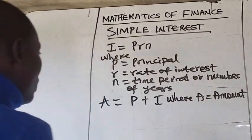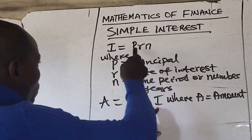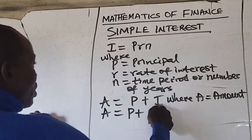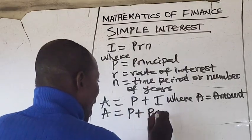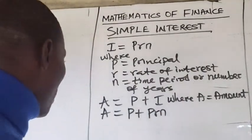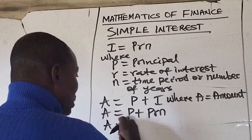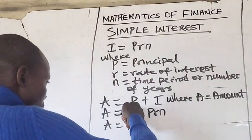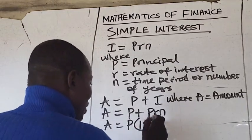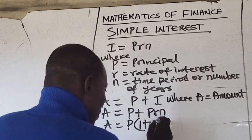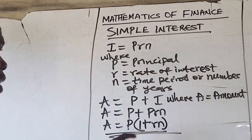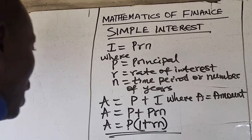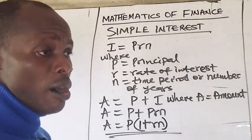Since I = PRN, the amount is principal plus interest, which is P + PRN. Factorizing the common variable P gives us A = P(1 + RN). That is the formula for calculating the amount under simple interest.